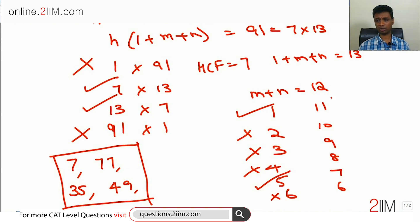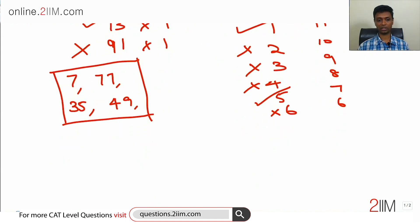Let's go to the other possibility where HCF is 13. HCF between the two numbers equals 13. m plus n plus 1 equals 7. m plus n equals 6. 1 comma 5, 2 comma 4, 3 comma 3.